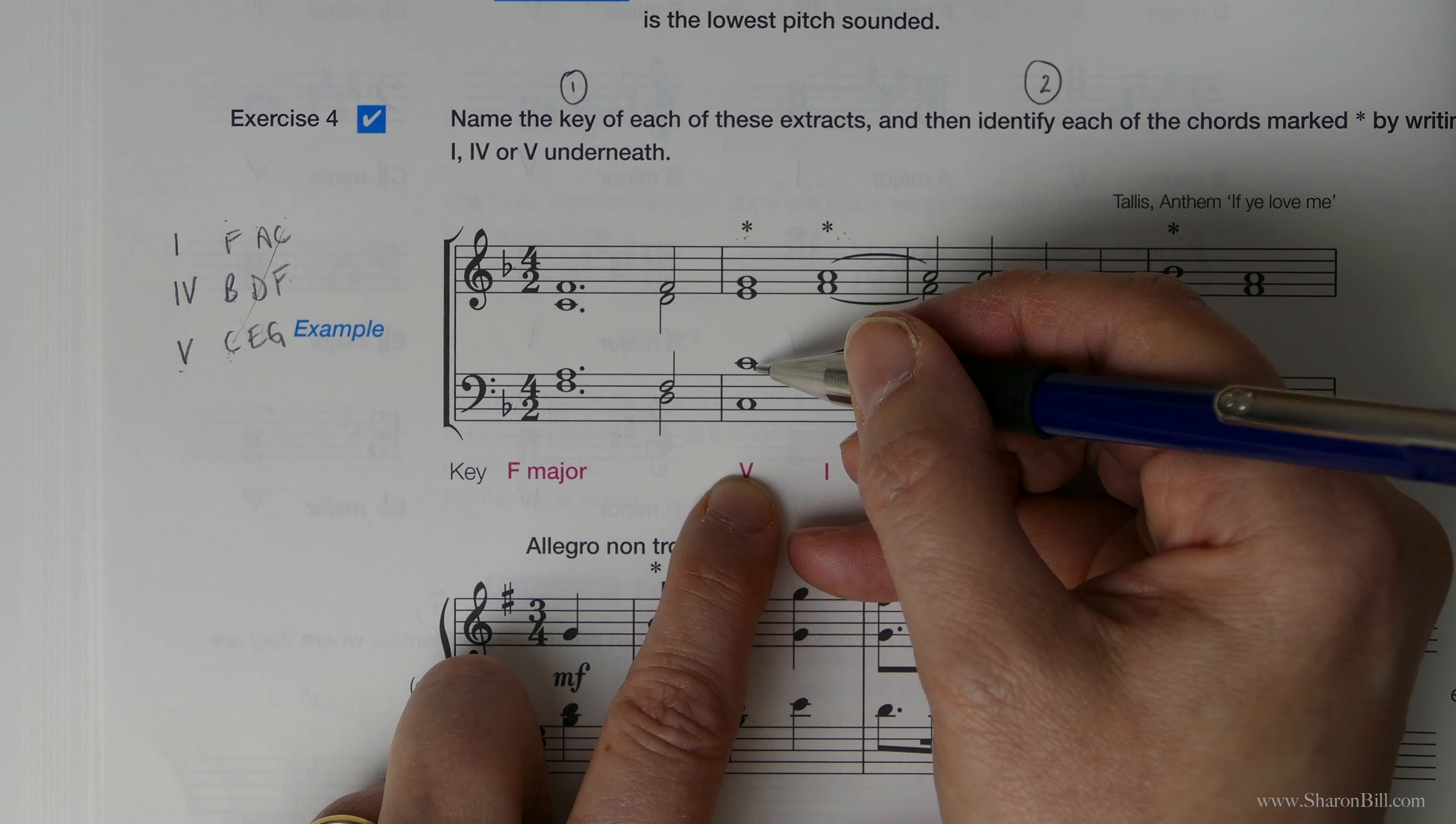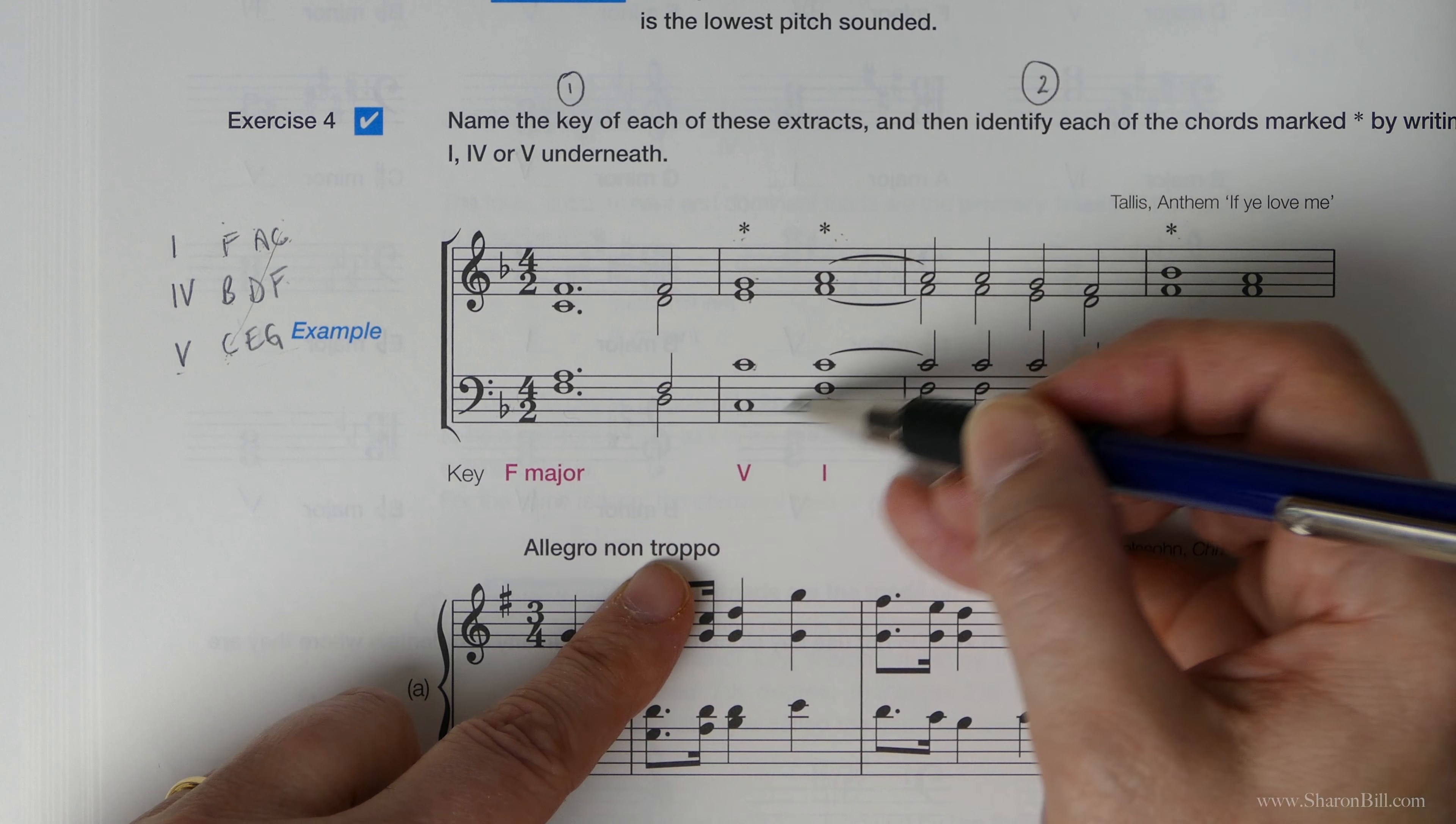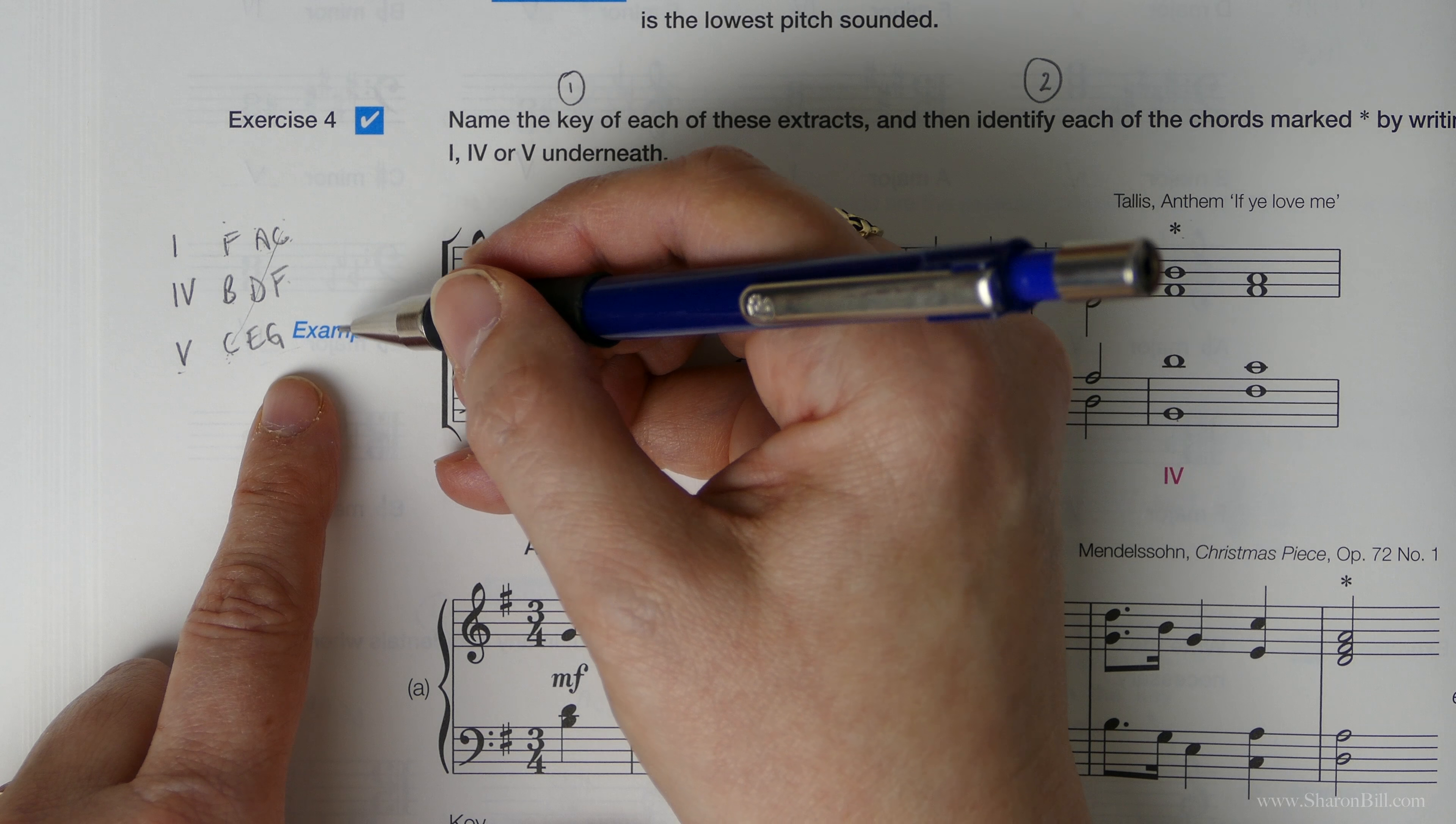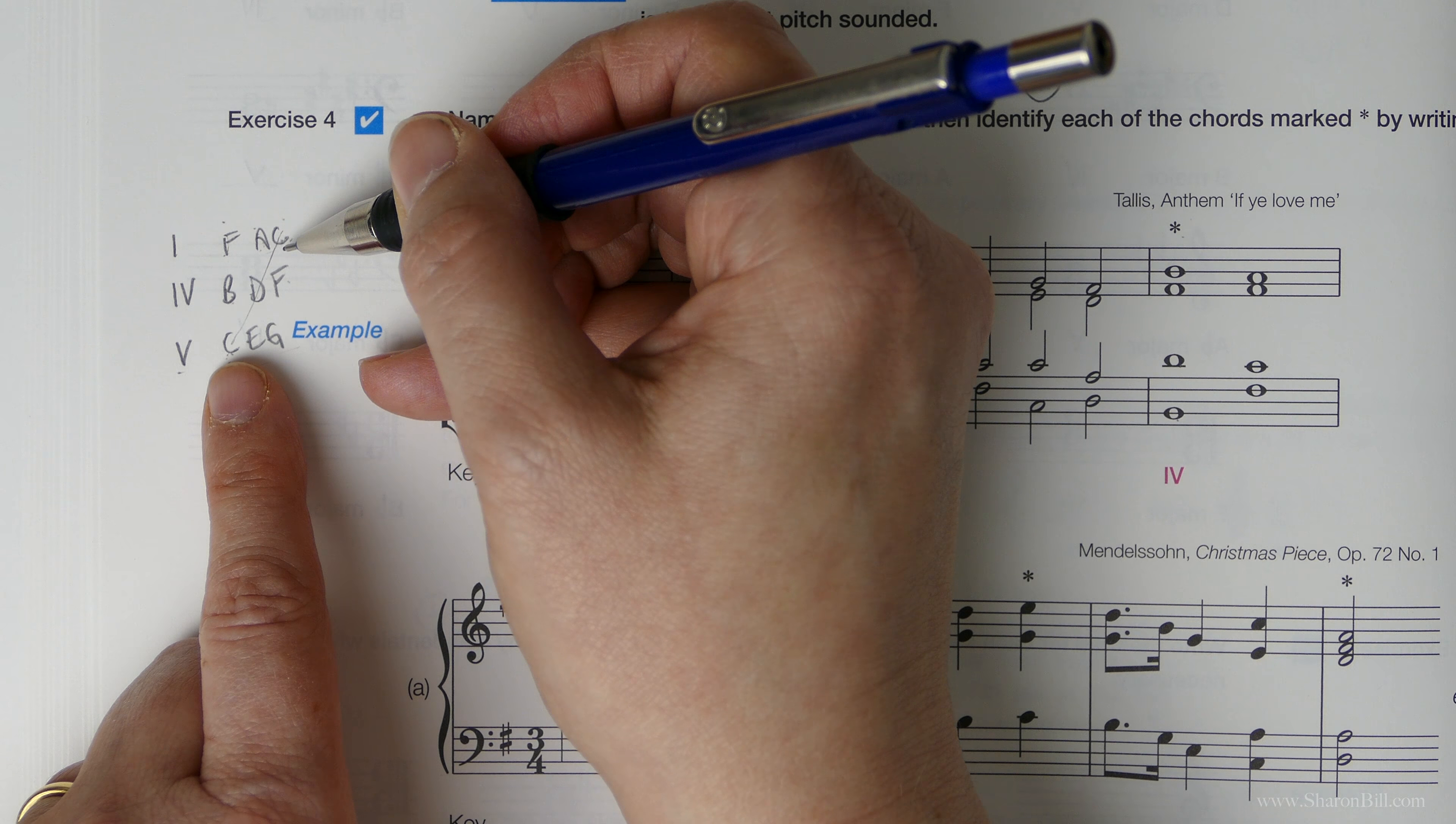Now notice a triad, as the name implies, tri, has three notes. However, when we split it over two staves, we double a note. There's lots of rules that will be coming into which note you double and so on. However, for now, it's just enough to know that one of these will be doubled. It's usually going to be the key note, the bottom note, the root of the chord. And then it's still in principle the same chord, just with a doubled note.